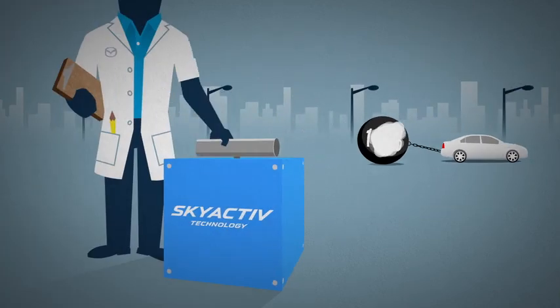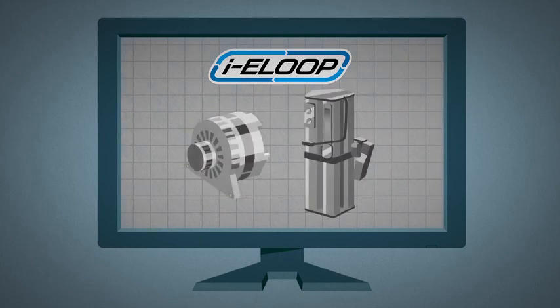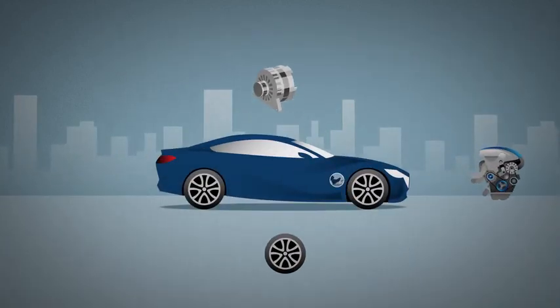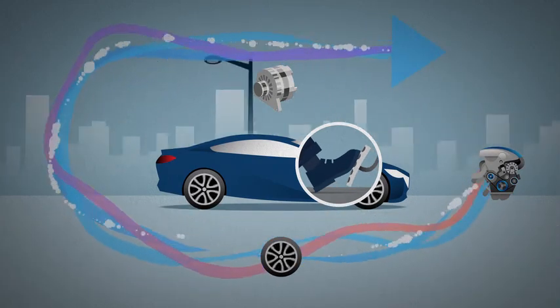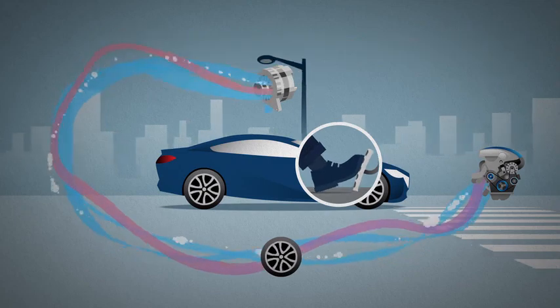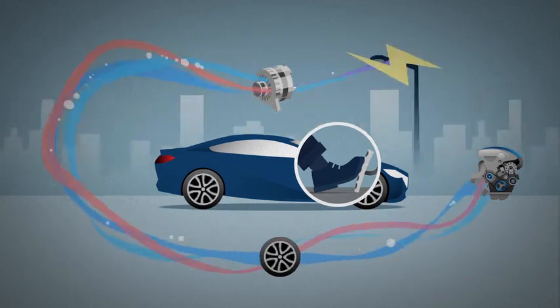But we invented a way to reduce that to zero. i-ELOOP, a regenerative braking system that recovers wasted energy. It uses a special alternator that freewheels when the engine moves the car. But the moment you let off the gas, it wakes up to turn outgoing energy into electricity. These huge surges of power need to be stored somewhere.